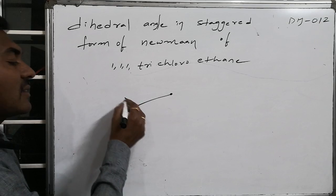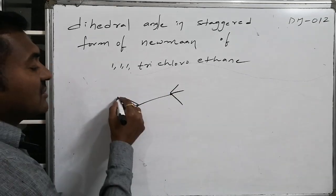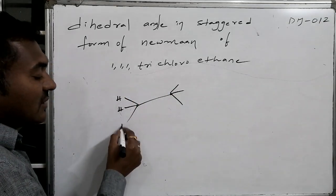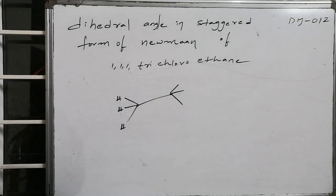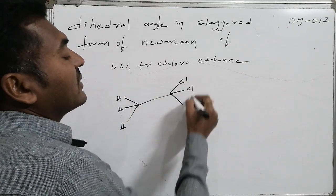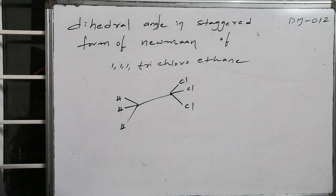Whereas in this ethane, there are three connectivities with respect to hydrogen. As per the given information, it is 1,1,1-trichloroethane.